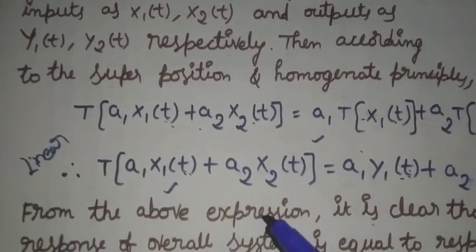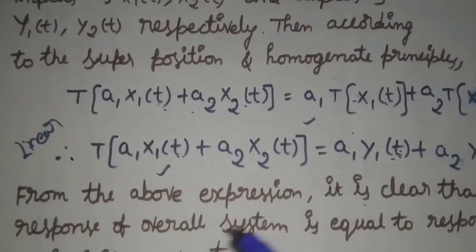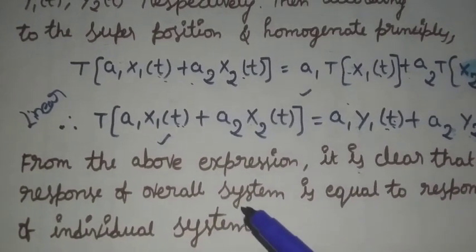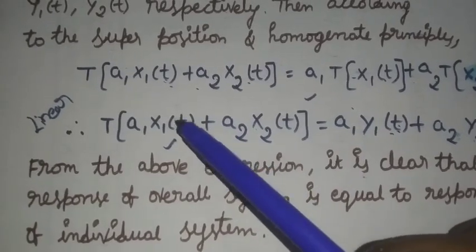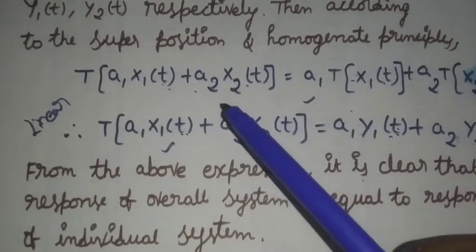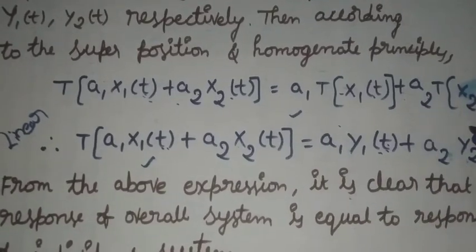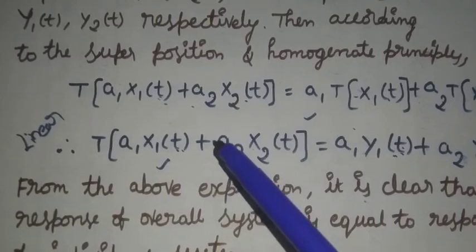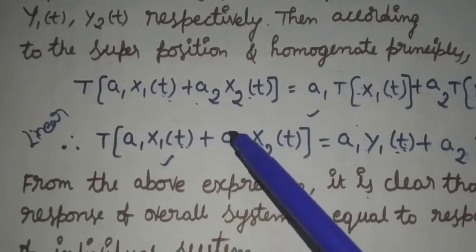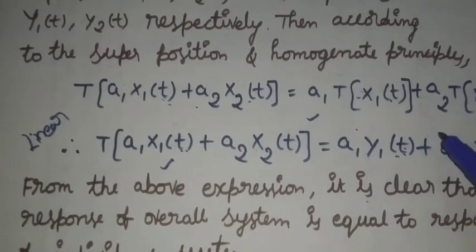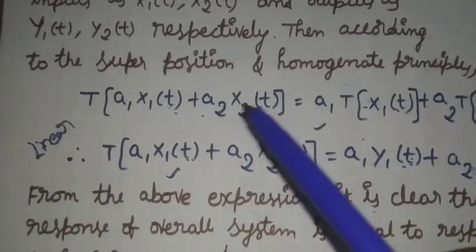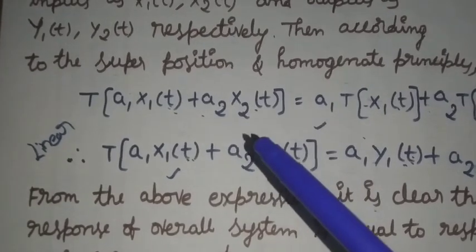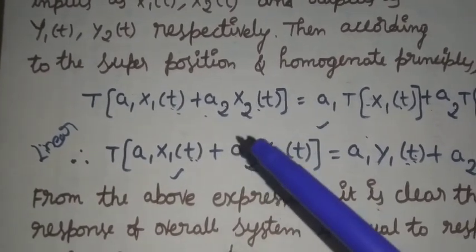Therefore, from the above expression, it is clear that the response of the overall system is equal to the sum of the responses of the individual systems. We can clearly observe that the total response of the system is equal to the individual response of the system. This is the condition for a linear system. If it satisfies this condition, the system is linear; otherwise, it is non-linear.